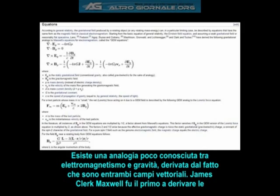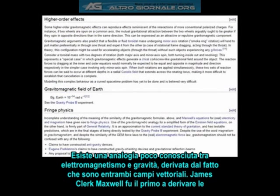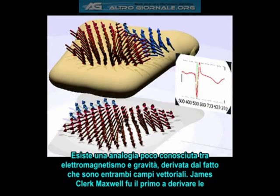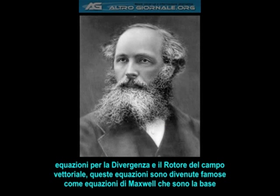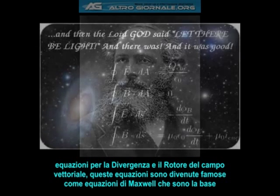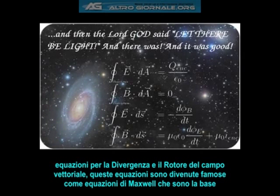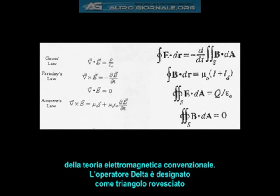There is a little-known analogy between electromagnetism and gravity, which is derived from the fact that they are both vector field functions. James Clerk Maxwell was the first to derive the equations for the divergence and curl of the vector field. These equations became famously known as Maxwell's equations, which are the foundation of conventional electromagnetic theory.